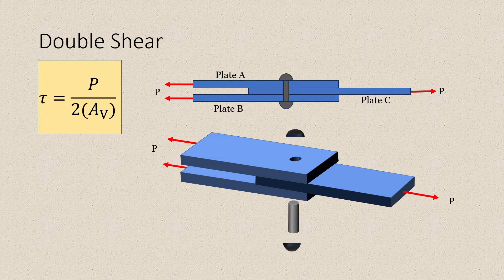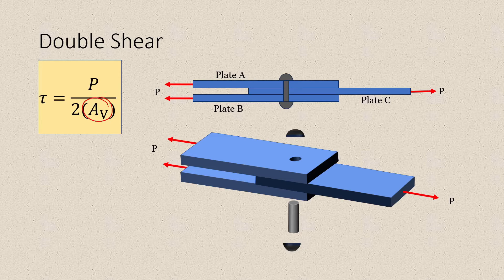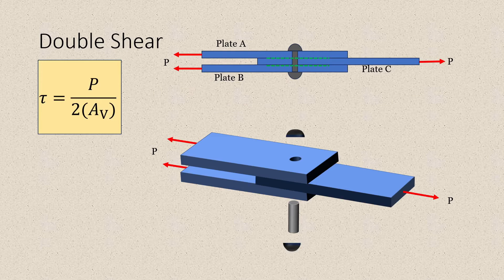Shearing stresses are commonly found in bolts, pins, and rivets used to connect various structural members and machine components. Double shear happens when, as we make two cuts to reveal the internal force in our bolt, there will be two resisting areas — that's why we have two times the shear area. Notice that at the junction point of the two plates, we can pass two cutting sections: one right here and another one right here.